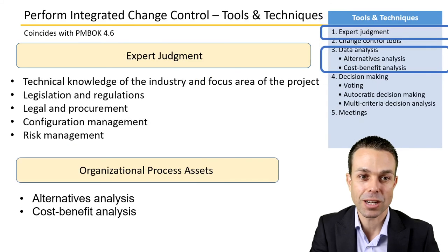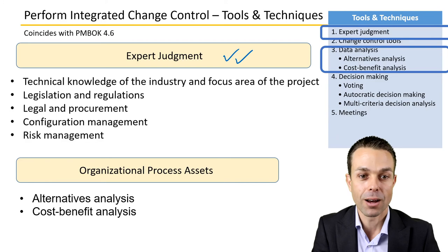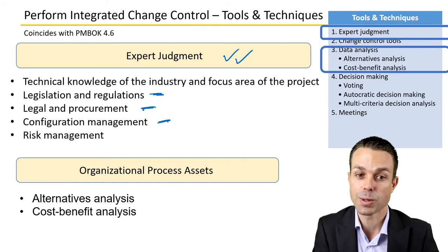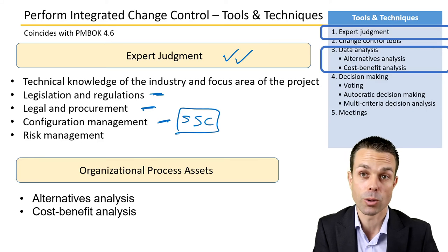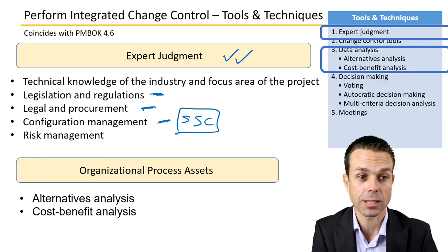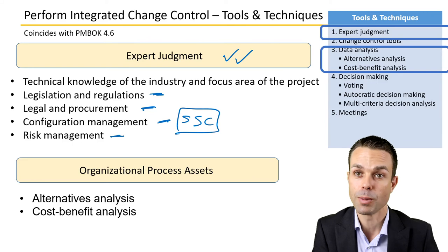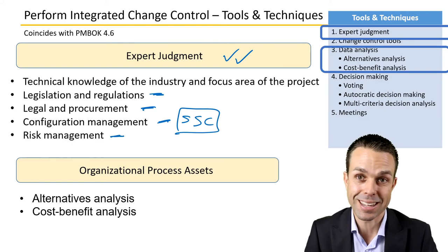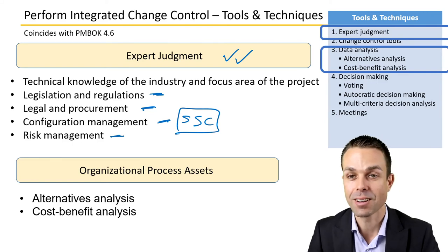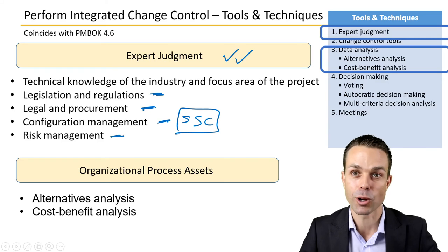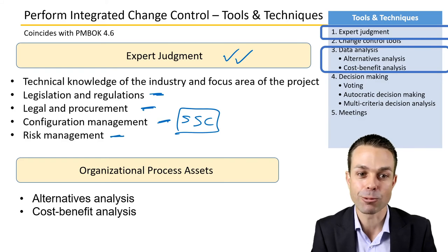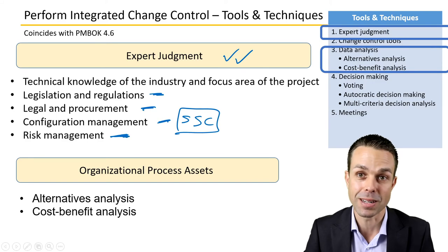You will need expert judgment from experts in the particular areas you're looking into: legal or procurement, legislation or regulations, configuration management, and the owners of scope, schedule, and cost in the project. You might also need experts from where the project is being delivered, because they really understand the process and the product and can see risks that might happen as part of delivery.